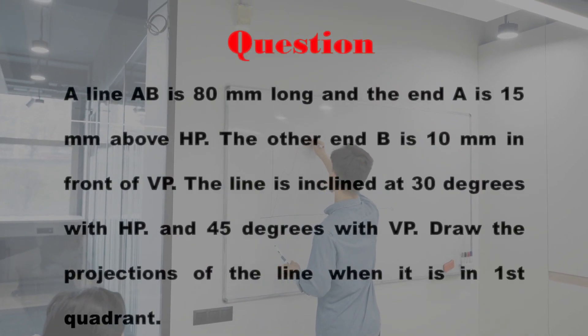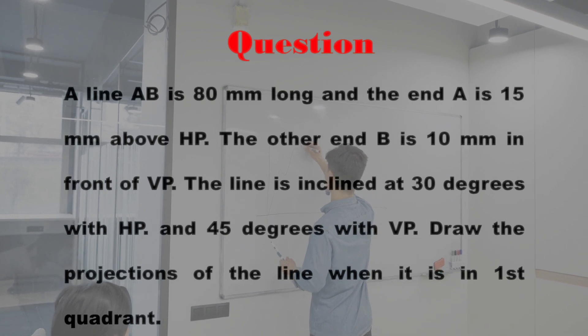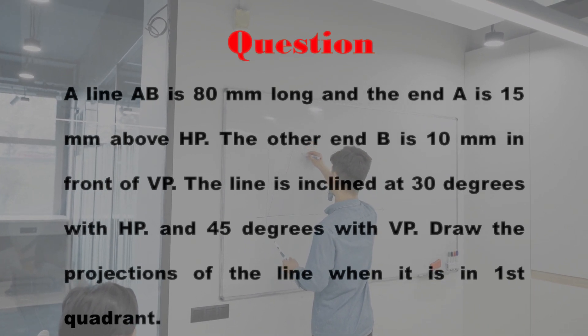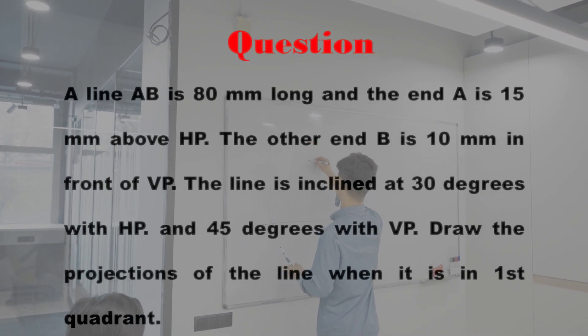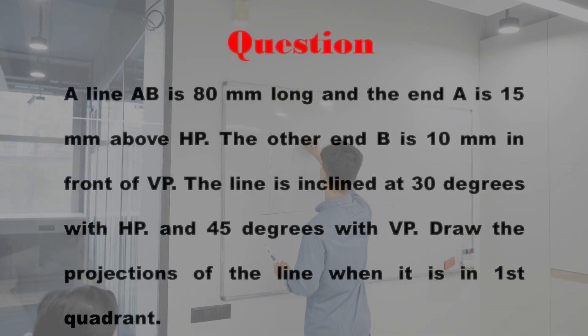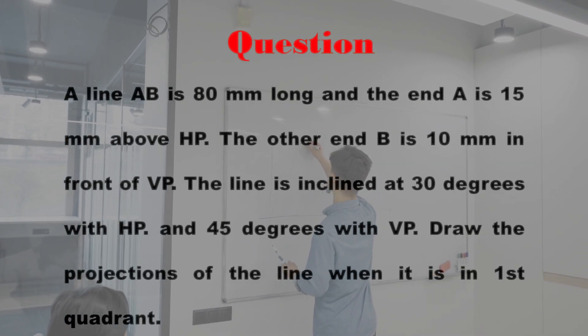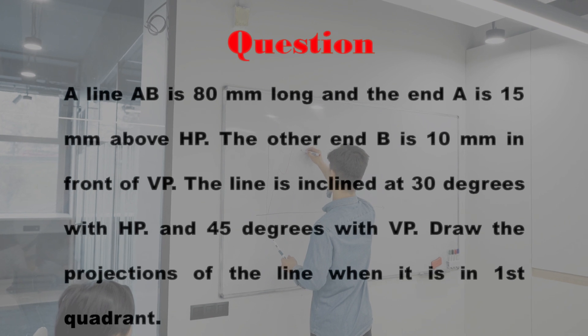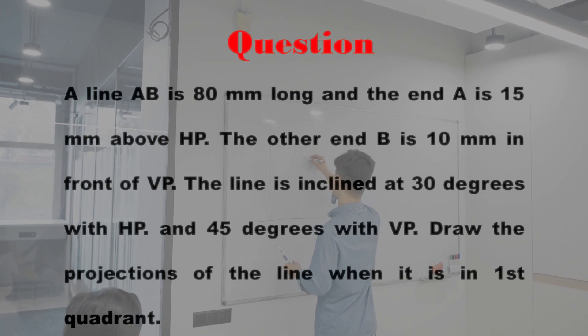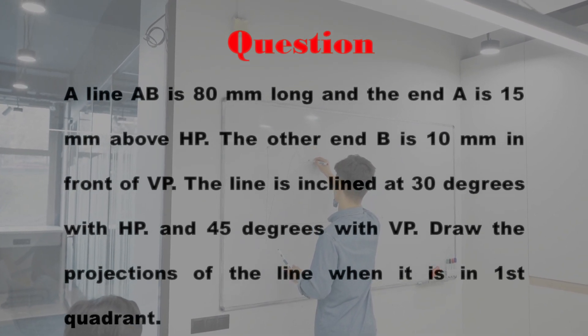A line AB is 80 mm long and the end A is 15 mm above HP. The other end B is 10 mm in front of VP. The line is inclined at 30 degrees with HP and 45 degrees with VP. Draw the projections of the line when it is in first quadrant.